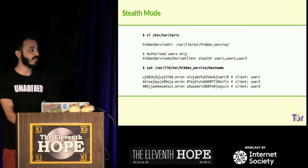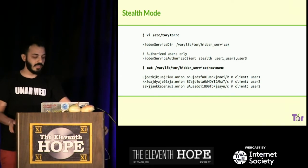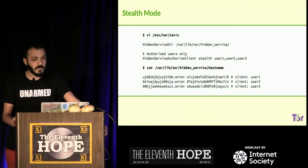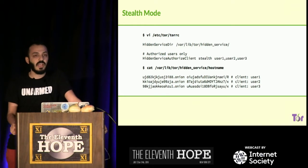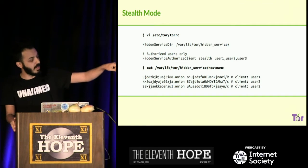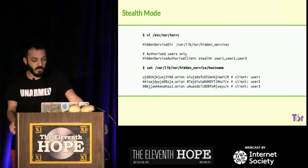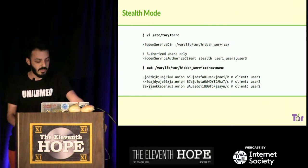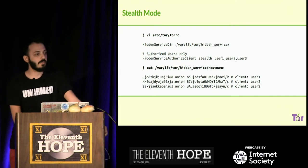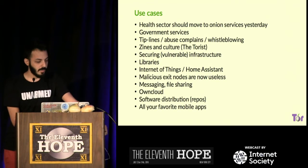There's also stealth mode. You add this option to your torrc file: HiddenServiceAuthorizedClient. In this mode, each client that wants to connect to your onion service has a unique onion address with a unique key. The first part is the onion address, the middle part is the unique key, and the last part is the client identifier. Users one, two, three all have different onion addresses and different keys. This helps for special infrastructure setups.